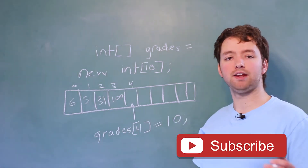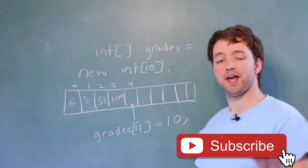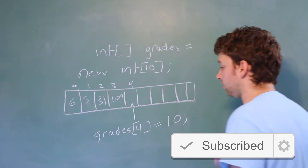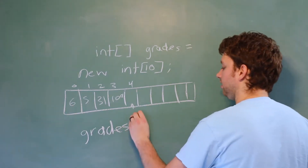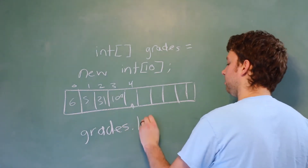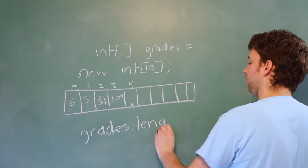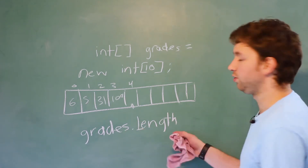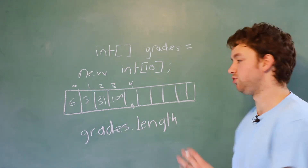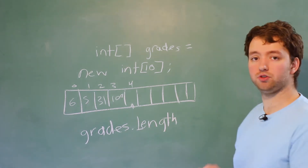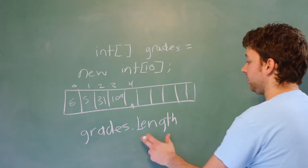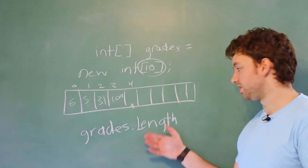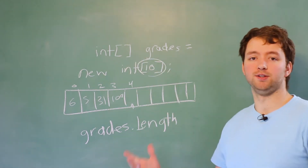We can programmatically get the length of the array using a property. That's going to look like grades.Length — with a capital L — and you don't use parentheses, you just use it as is. That's going to give us the value 10, and you could use this for loops and so forth.